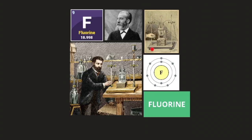In 1886, Henri Moissan was the first person to isolate fluorine and obtain it by itself. He did this through electrolysis, combining hydrogen fluoride with potassium fluoride to make an aqueous solution. He earned the Nobel Prize for being able to isolate fluorine as an individual element — a very difficult process, because fluorine is extremely active when by itself and reacts with almost anything to gain its missing electron and become stable.